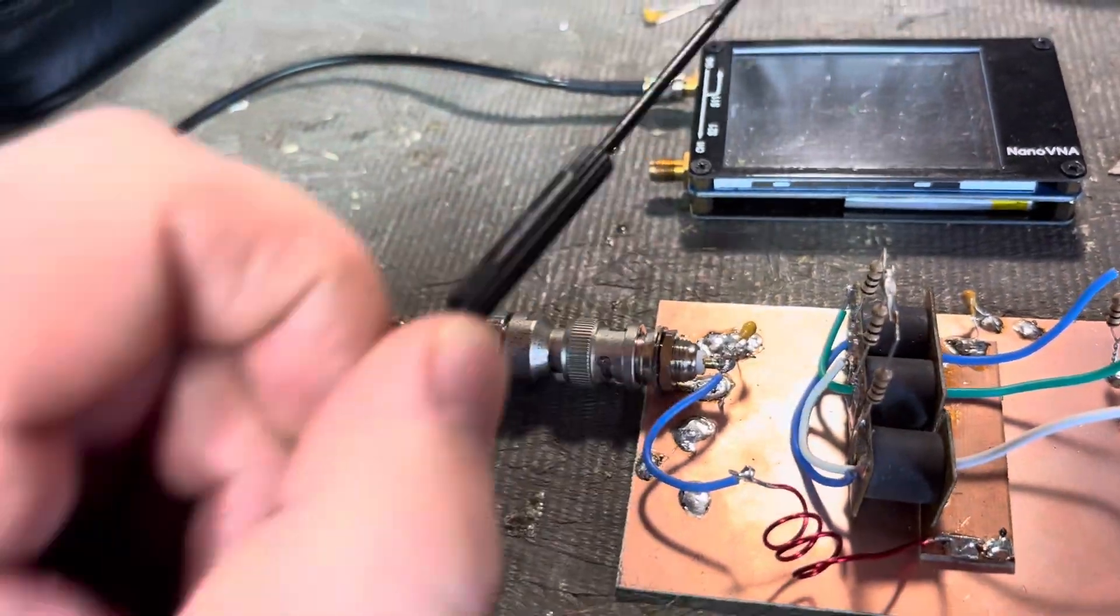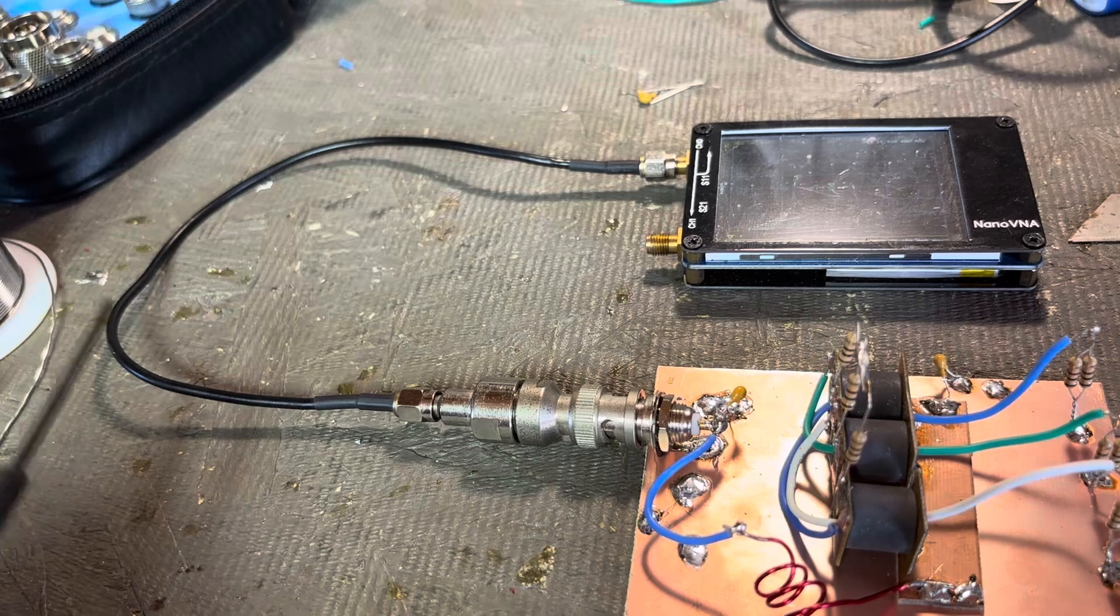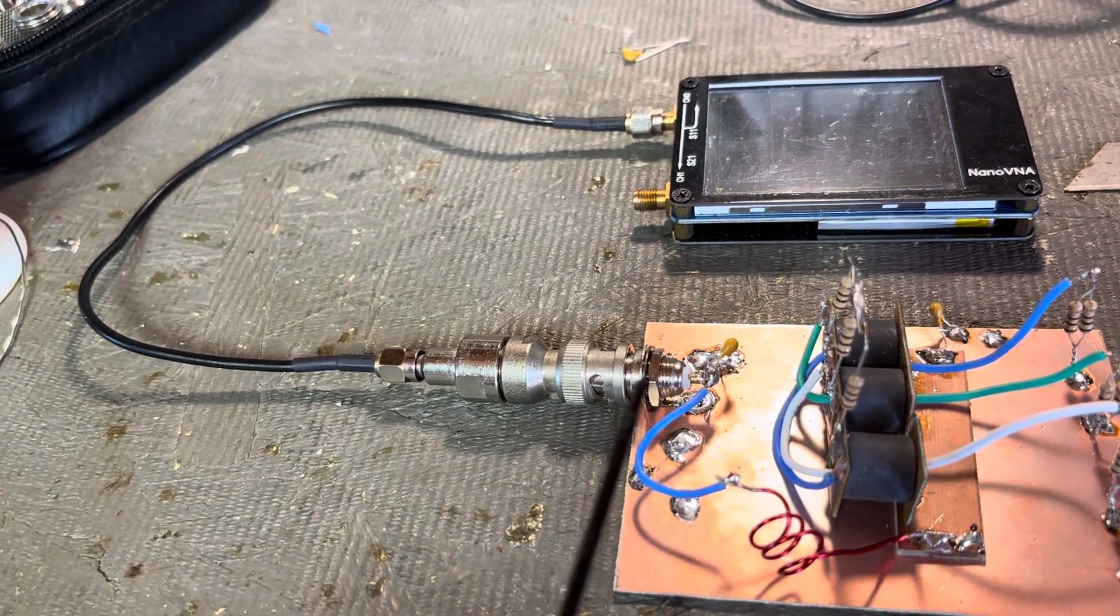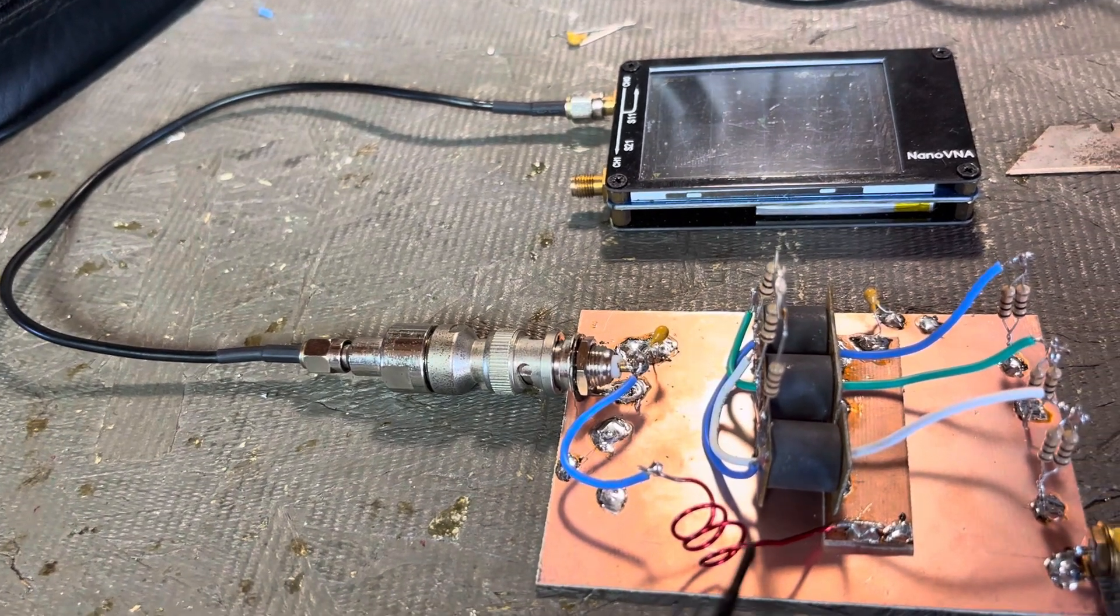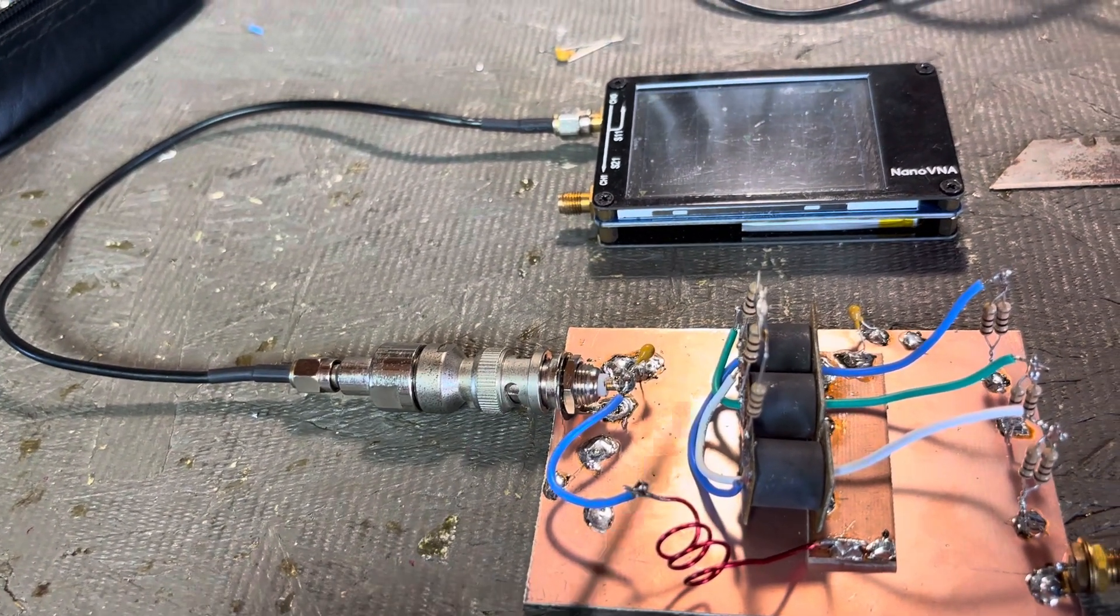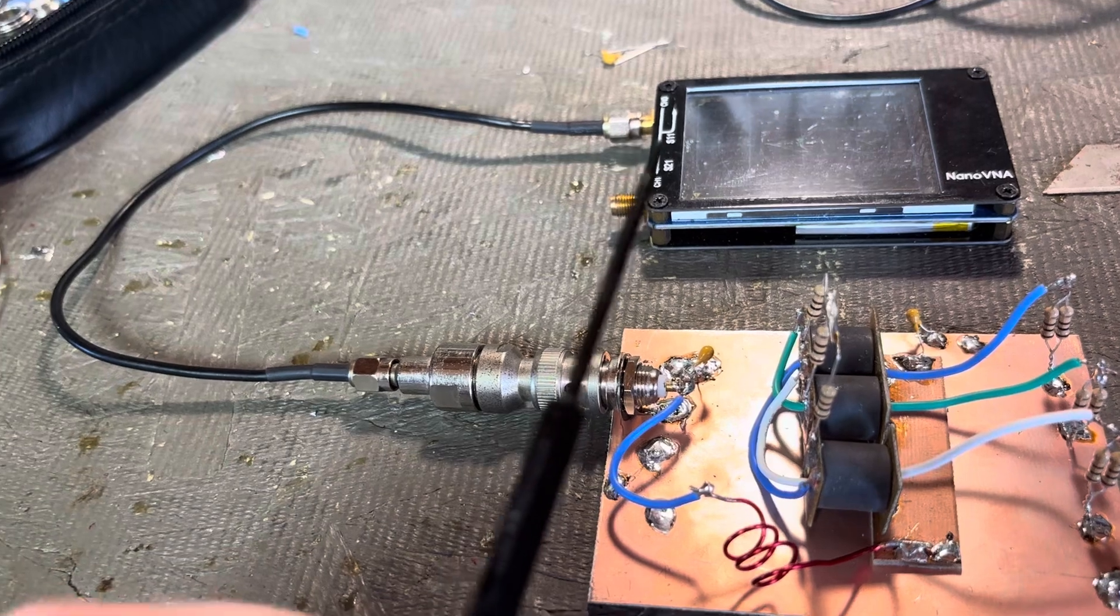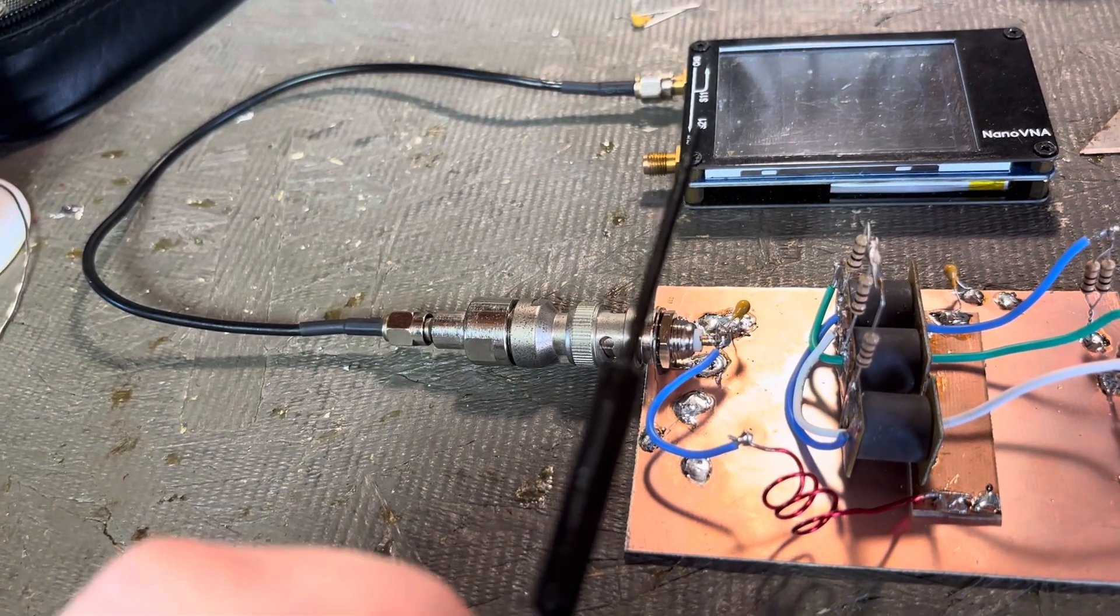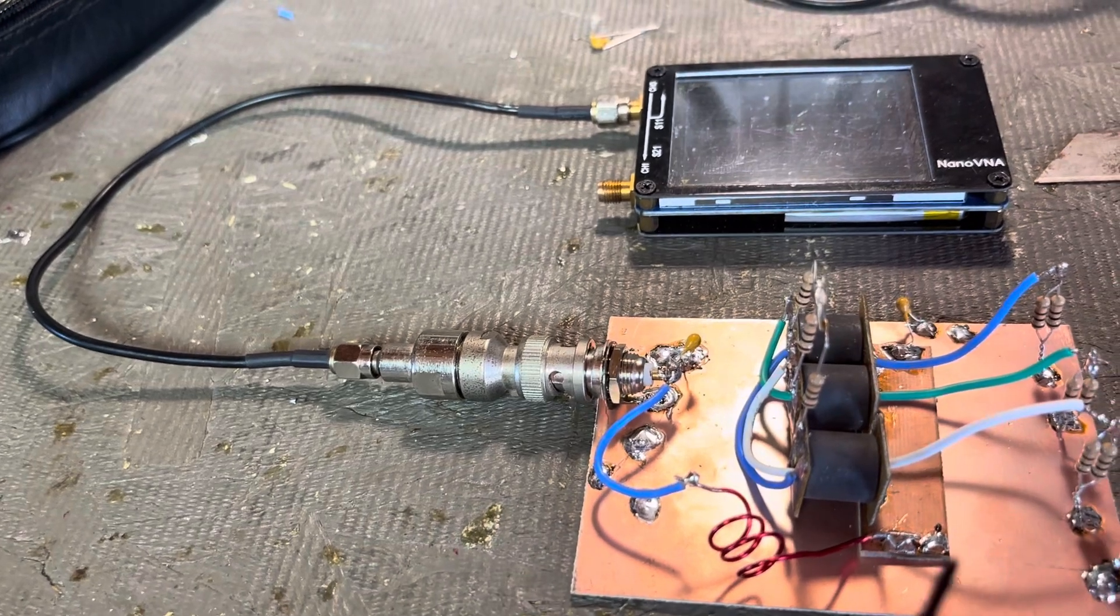So the signal flow is, again, out of a 50 ohm output into a 50 ohm input, signal is transformed here. So the output of the radio thinks it's driving 50 ohms, but it's 16 ohms.